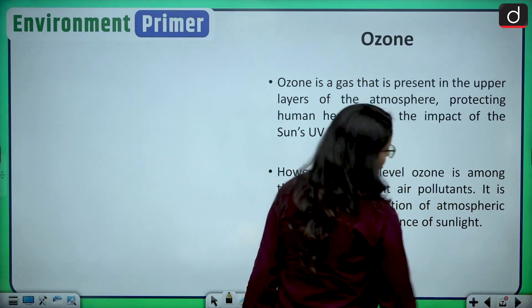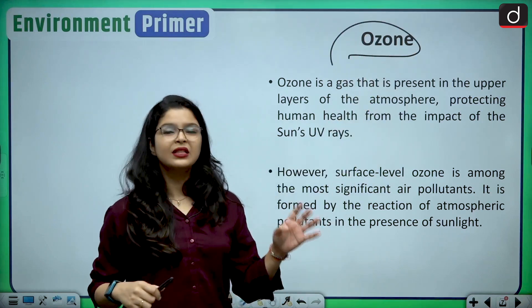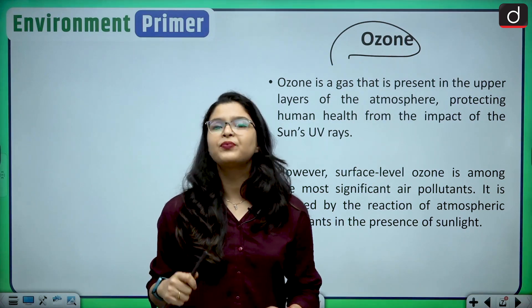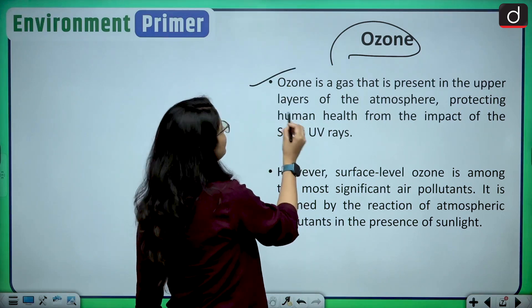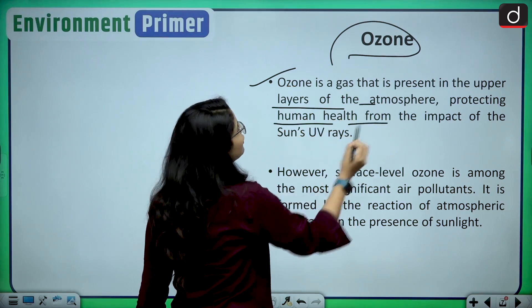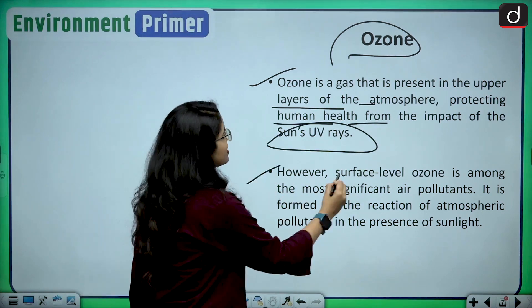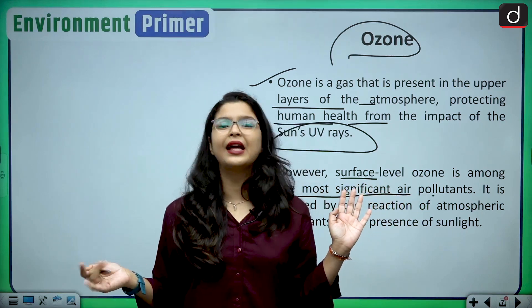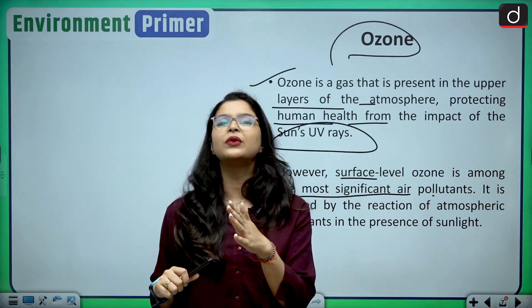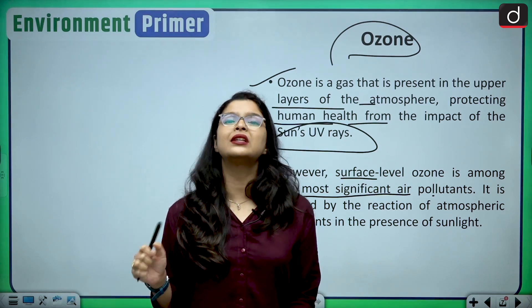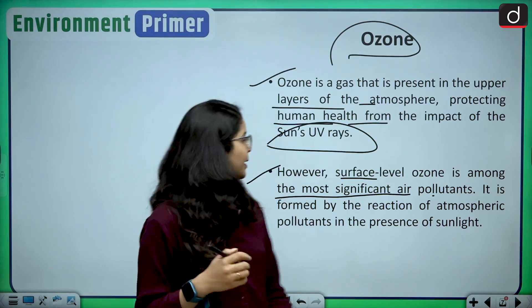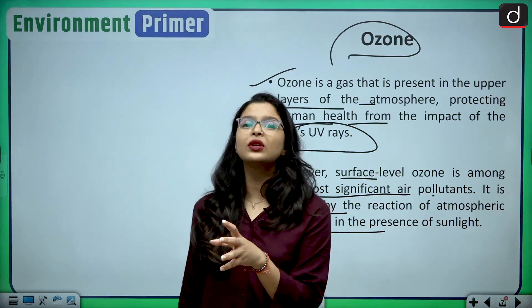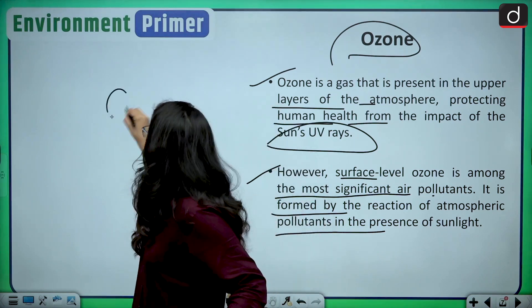Then comes the very famous ground ozone. Ozone is present in the stratosphere and protects us from harmful ultraviolet rays of the sun. However, ozone also has a dual character — surface level ozone is amongst the most significant air pollutants. It is formed by the reaction of atmospheric pollutants in the presence of light, and this ozone can cause various respiratory diseases such as COPD.